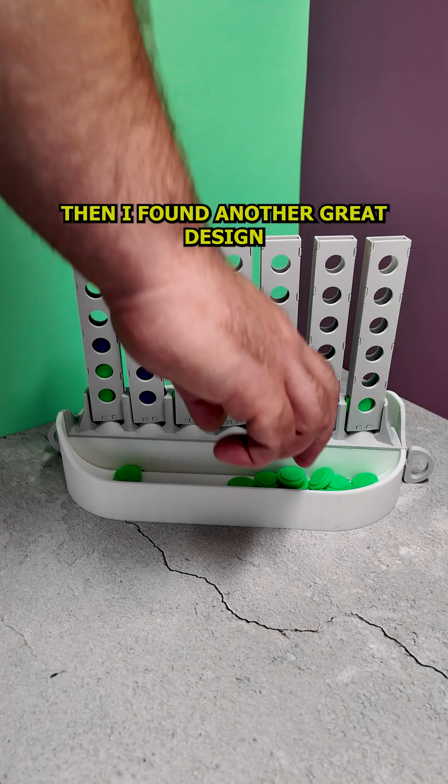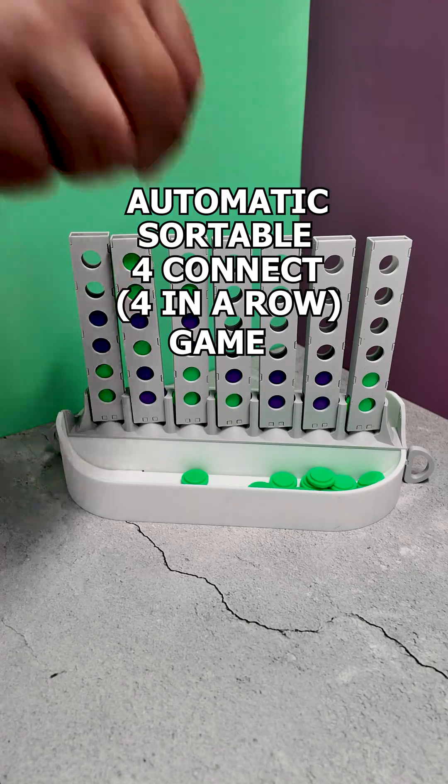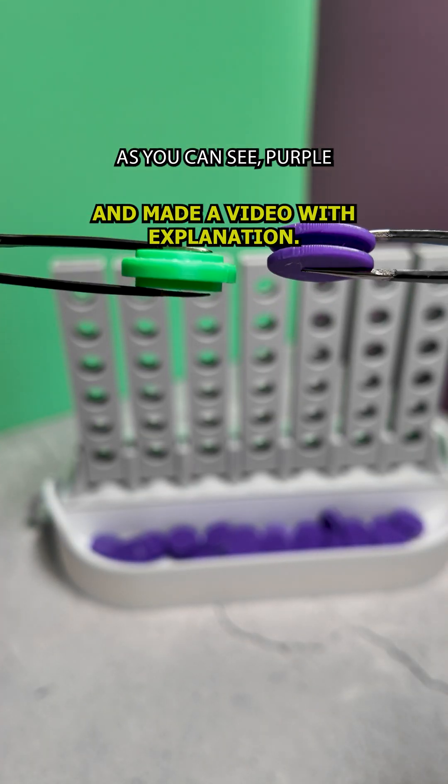Then I found another great design, with the name almost as poetic and simple as Cascade Connect, and that name is Automatic Sortable 4 Connect, 4 in a row, game. Designed by Seishud. Again, I printed it and made a video with explanation.